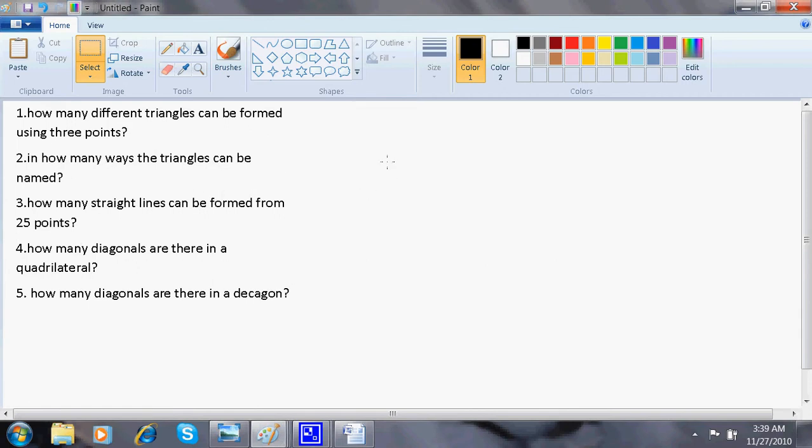Here is the question: How many different triangles can be formed using three points? I have three points. How many different triangles I can make? Obviously, only one triangle. In how many ways can the triangles be named? As I told in the previous video, it can be named by A, B, C, B, C, A and so on. If there are three, it's three factorial, that is six.